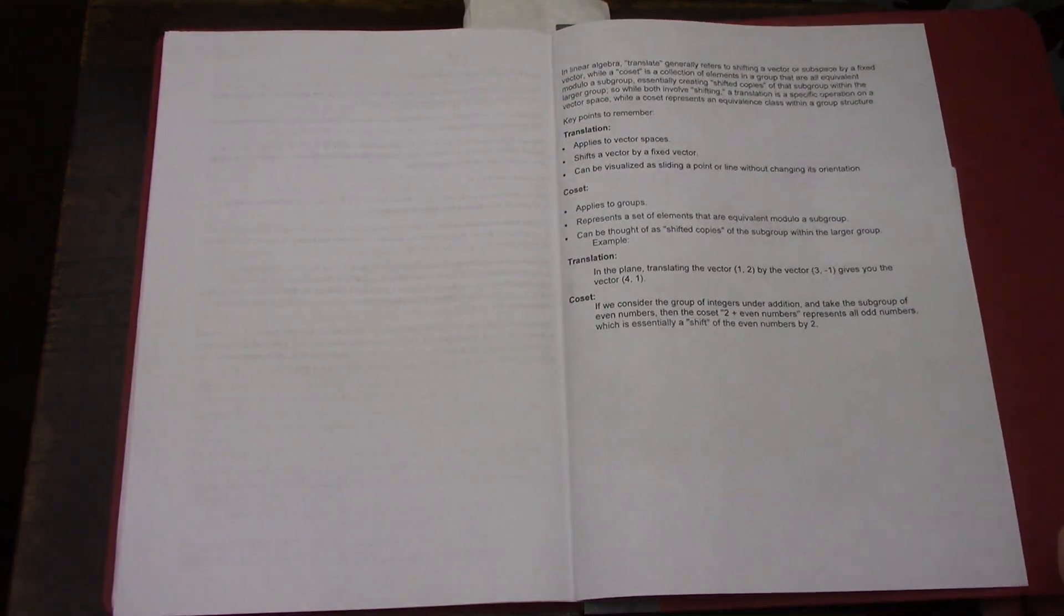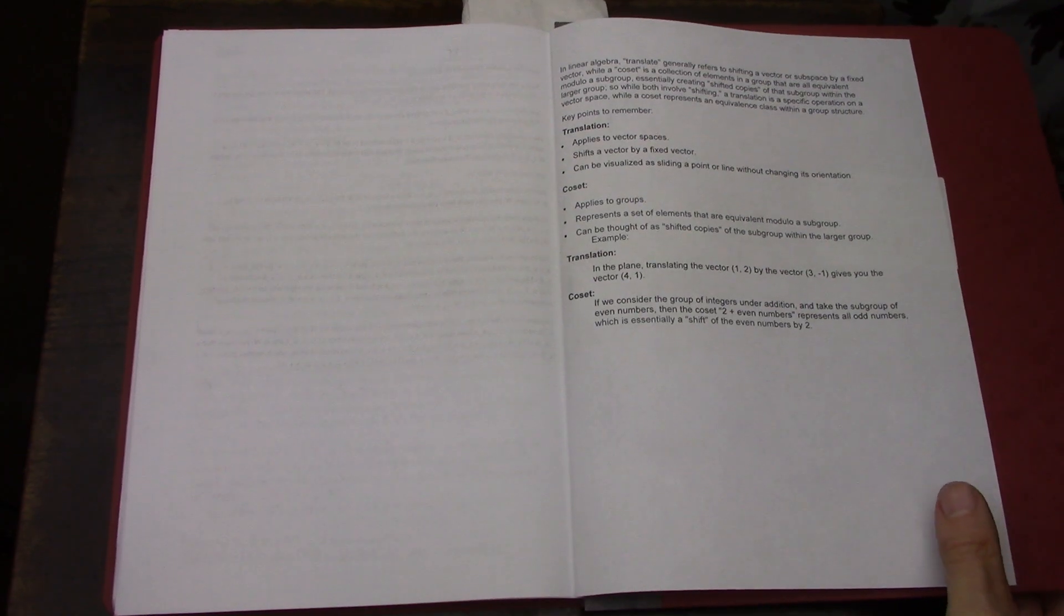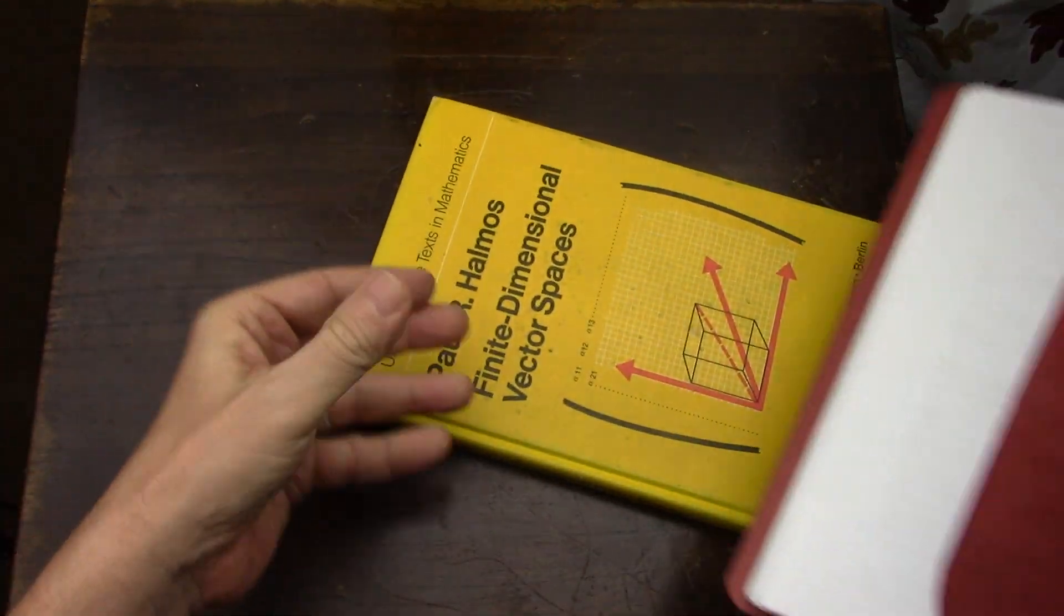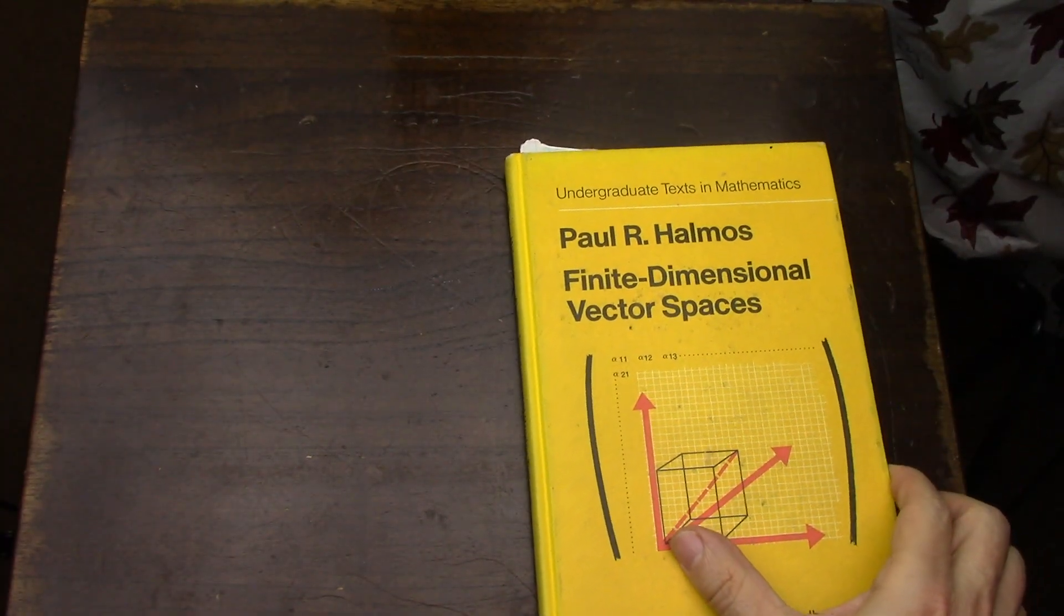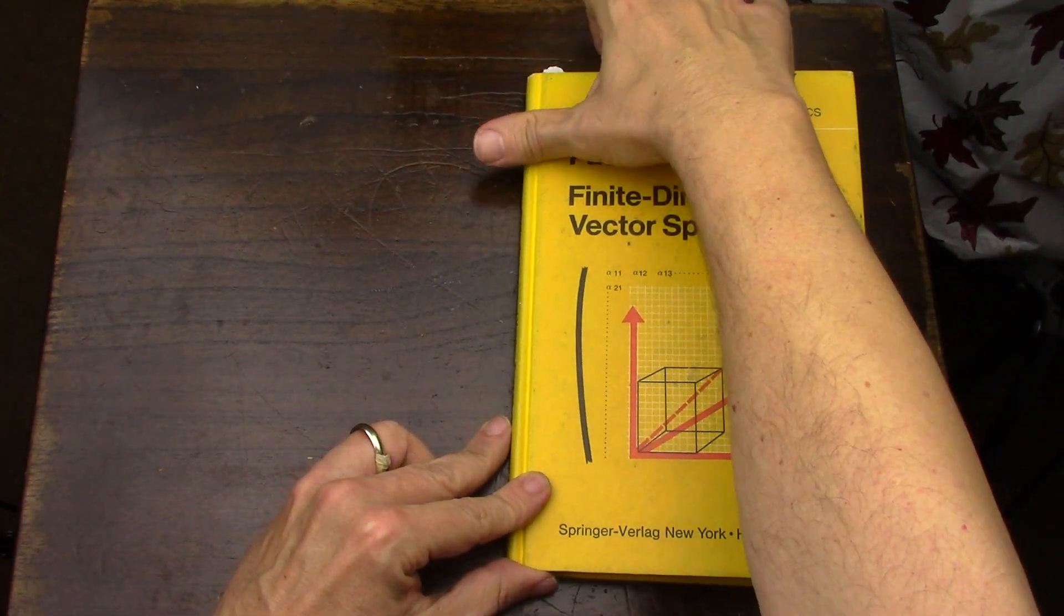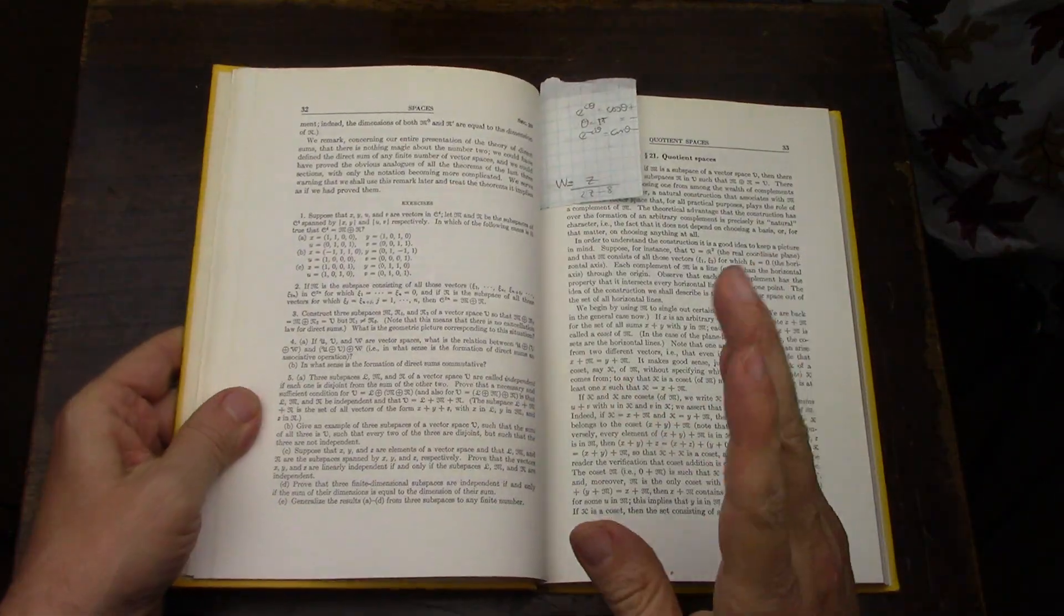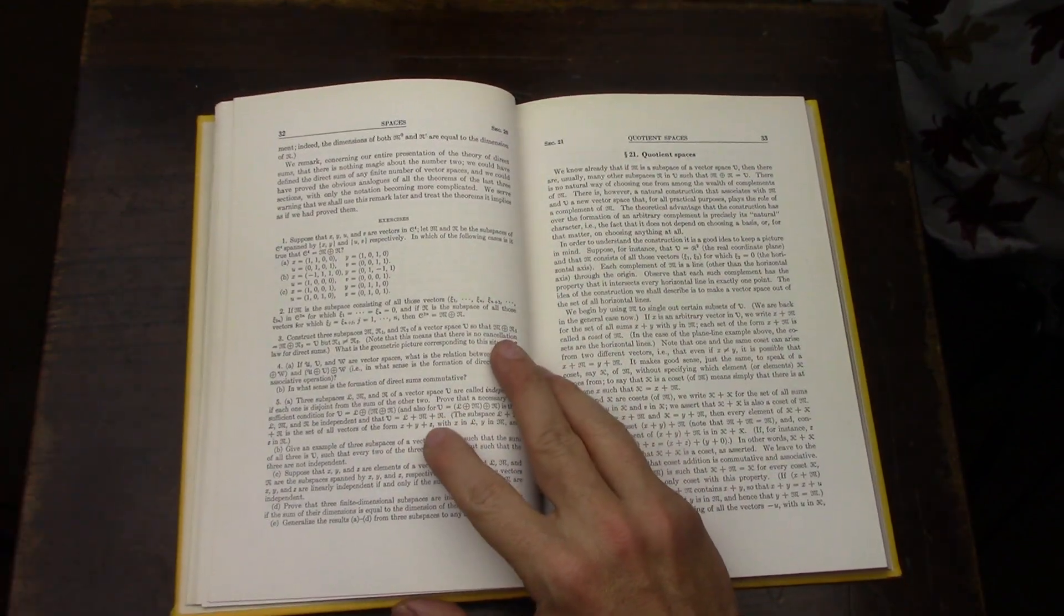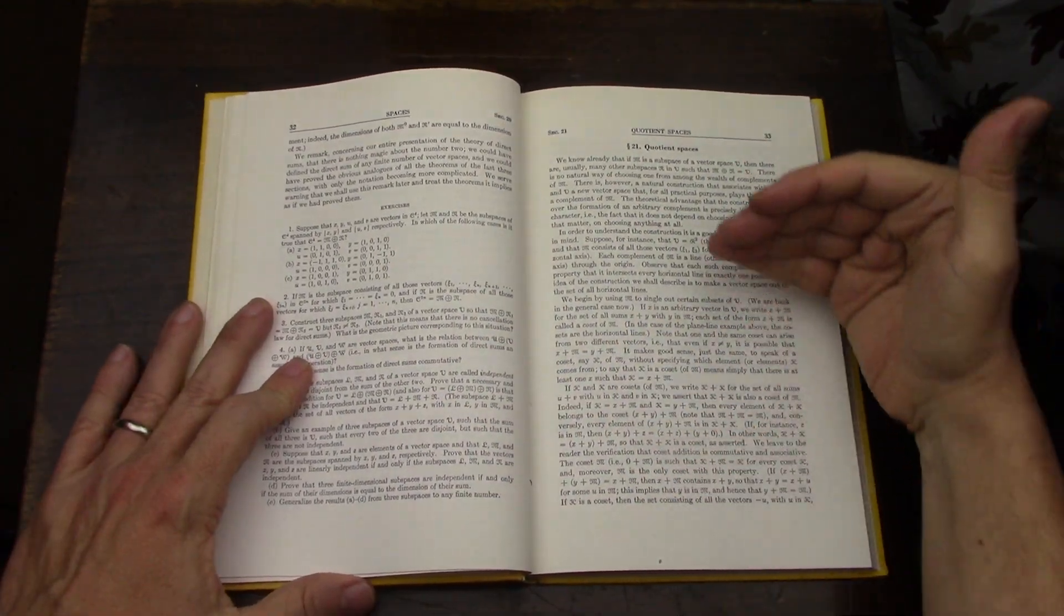So but in the case of Axler he uses translate. So now let's just go quickly through the books and again I'm not going step by step but I just want to get the point across in this video that these three books complement themselves really really well when it comes to quotient spaces and cosets.